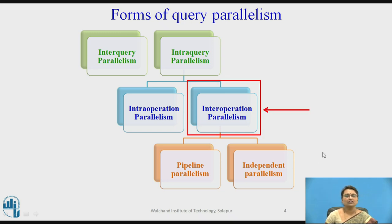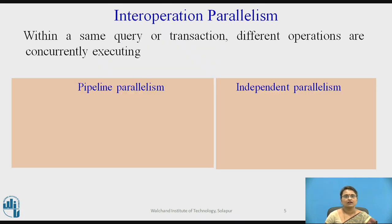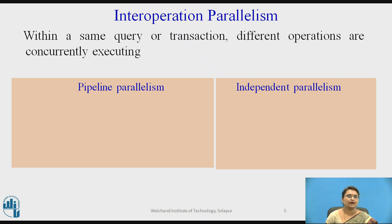Today in this video we are talking about inter-operation parallelism. In inter-operation parallelism, if different operations are there in the same query or transaction, those are concurrently executing. Two or more operations of a single query are parallelized, whereas in intra-operation parallelism a single operation is parallelized, for example parallel sort or parallel join.